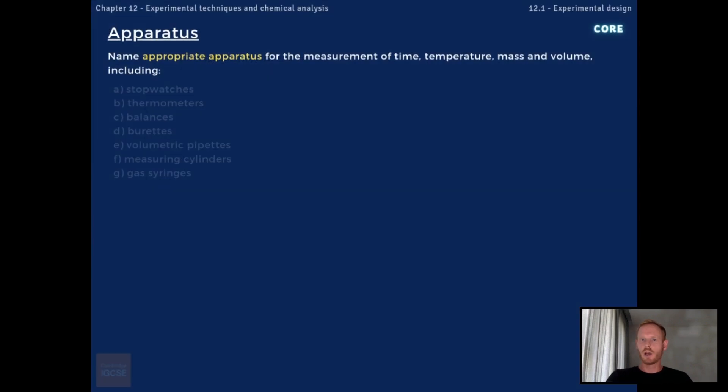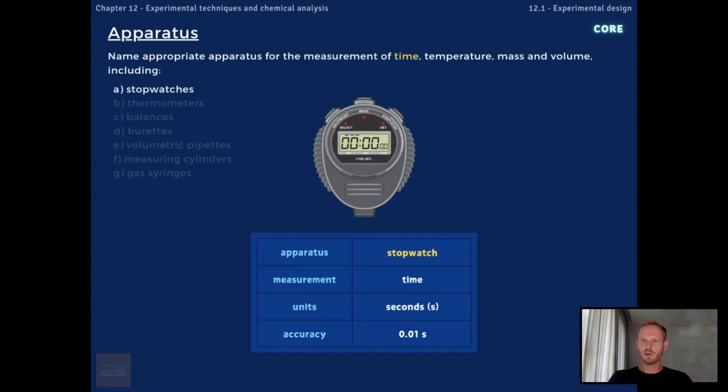You need to name appropriate apparatus for the measurement of physical quantities, including time, temperature, mass and volume. So time is measured using a stopwatch or stop clock, which are generally accurate to two decimal places. In a scientific context, the primary unit of time is the second, although minutes, hours, days or even longer units of time may be used instead, depending on the duration of the experiment.